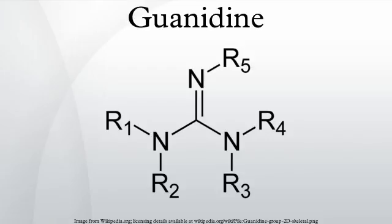Guanidines are a group of organic compounds sharing a common functional group with the general structure R3R4N–C=N–R5. The central bond within this group is that of an amine, and the group is related structurally to amidines and ureas. Examples of guanidines are arginine, triazabicyclodecene, saxitoxin, and creatine.